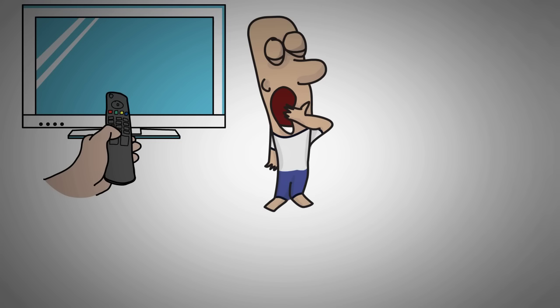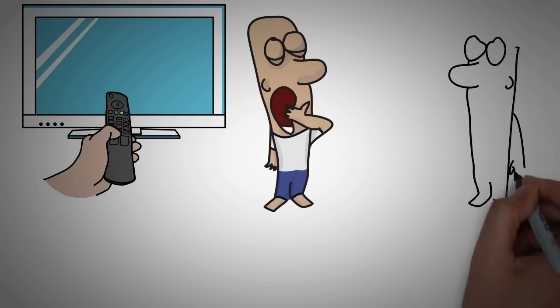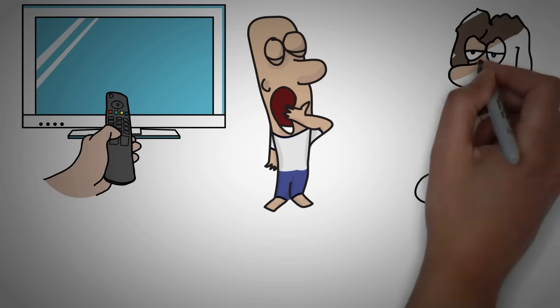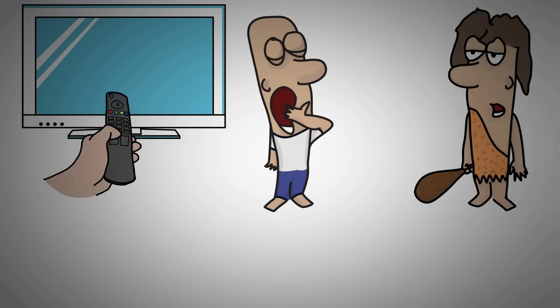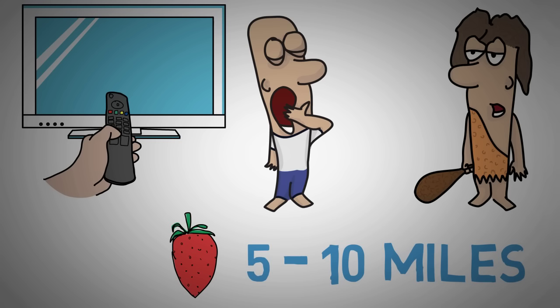This has become a norm in the past century, but we must remember that we didn't evolve for this type of sedentary lifestyle. We evolved as hunter-gatherers. Our ancestors had to walk 5 to 10 miles on an average day just to be able to eat.